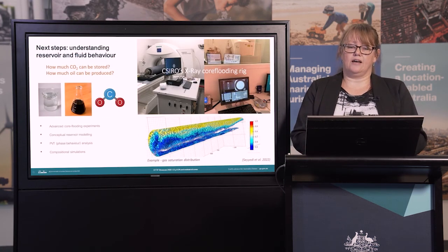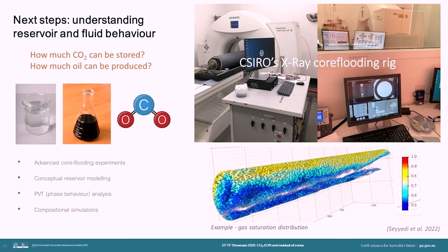We'll be releasing our data and reports on the identification of residual oil zones soon. In the meantime, we're moving ahead with other parts of our project. One of our goals is to answer questions around how efficiently the oil can be extracted using EOR and how much CO2 can actually be stored in that reservoir. We're approaching this through an experimental and reservoir modelling program of work, including advanced core flooding experiments, conceptual reservoir modelling, PVT analysis and compositional simulations. All of which will help us to build predictive tools around oil production and CO2 storage efficiency in residual oil zones under various conditions.